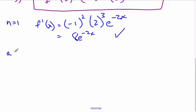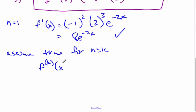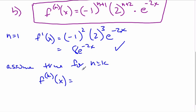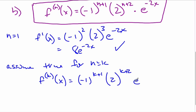I'm going to now assume true for n equals k, which means the k-th derivative of x is going to be negative 1 to the k plus 1, times 2 to the k plus 2, times e to the negative 2x. I'm going to assume this is the k-th derivative — that's my assumption.